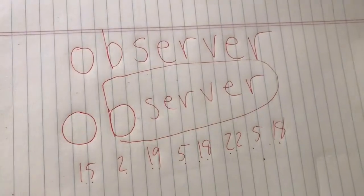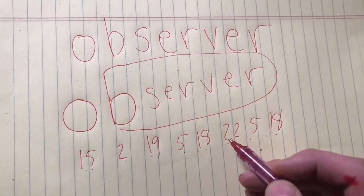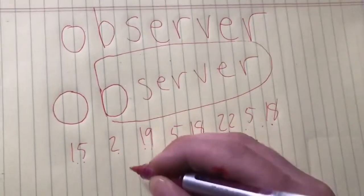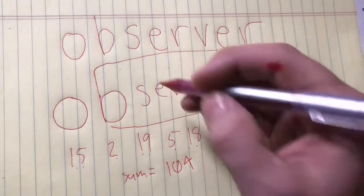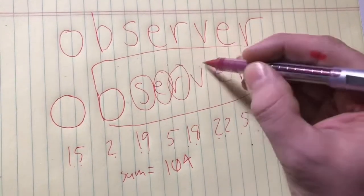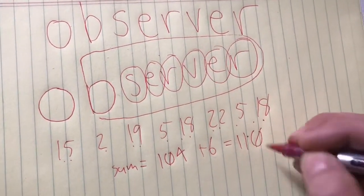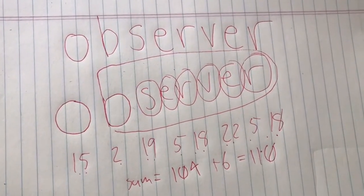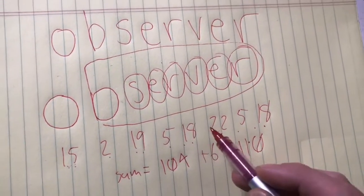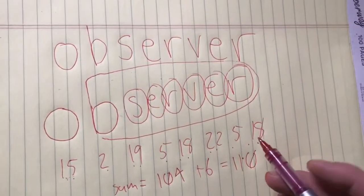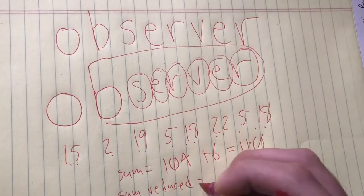The sum of fifteen, two, nineteen, five, eighteen, twenty-two, five, and eighteen — the sum is equal to one of four... one of five, one of six, one of seven, one of eight, one of nine, one of ten. All right, the sum of the single digits: one plus five, plus two, plus one, plus nine, plus five, plus one, plus eight, plus twenty-two, plus two, plus two, plus five, plus one, plus eight. So the sum reduced is equal to fifty.